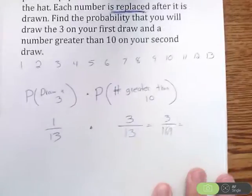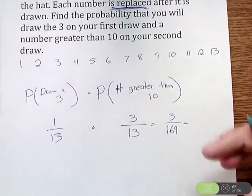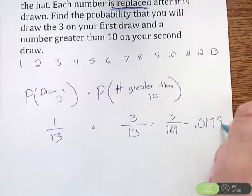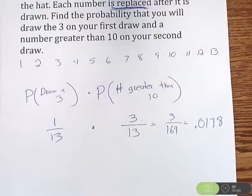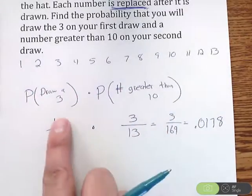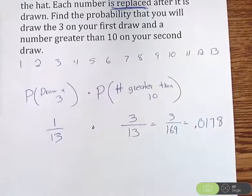But if you want to know the decimal equivalent, 1 divided by 13 times 3 divided by 13, you get 0.017, and we'll round that up to 0.0178. So that is the probability that we draw a 3, put it back in, and then draw a number greater than 10.